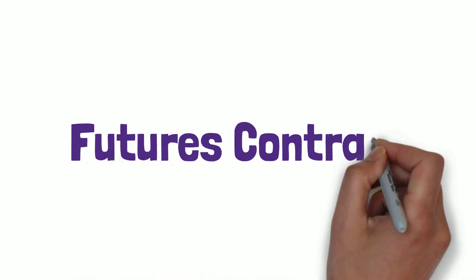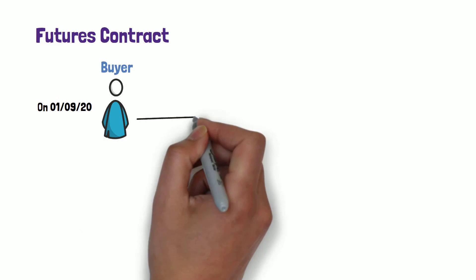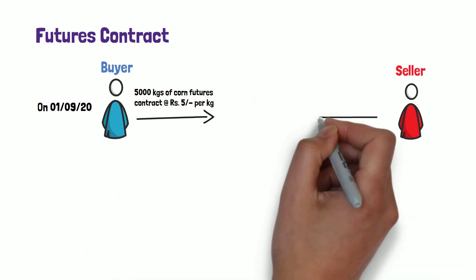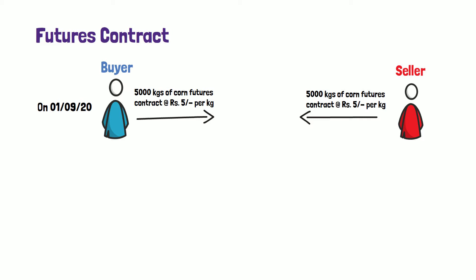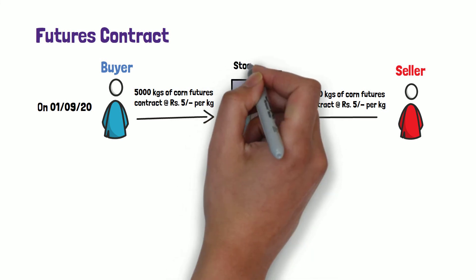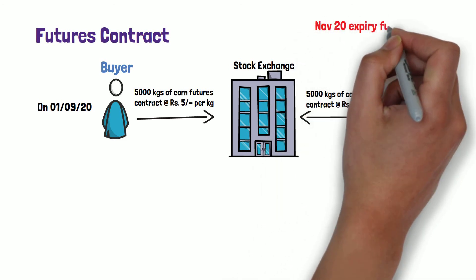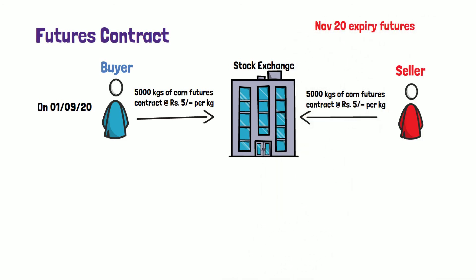Similarly, let us understand futures contracts with an example. On 1st September 2020, a buyer and seller enter into a 5,000 kg corn futures contract at rupees 5 per kg. The buyer is said to be long and the seller is said to be short. Unlike a forward contract, the buyer and seller enter into a contract through an intermediary such as a stock exchange. These are November 2020 expiry futures, meaning the contract will expire in November 2020.